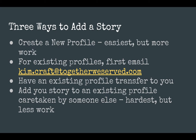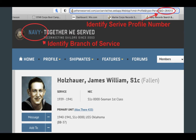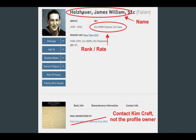If there is an existing profile, we need to first email Kim Craft to let her know, so she can help us decide how to deal with it. The information she'll need includes the identity service profile number found in the URL box, which can be up to six characters long, the branch the person served in, their name, and their rank. You'll be contacting Kim Craft — not the profile owner — to do this.